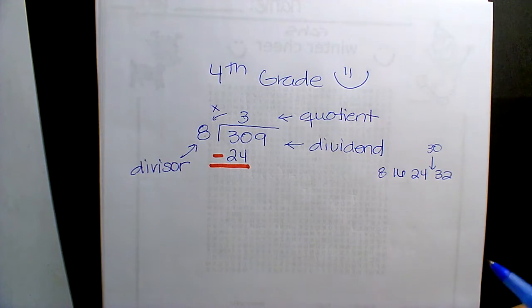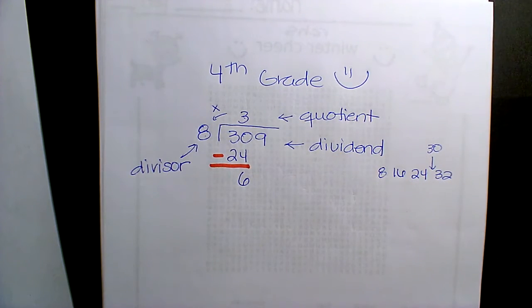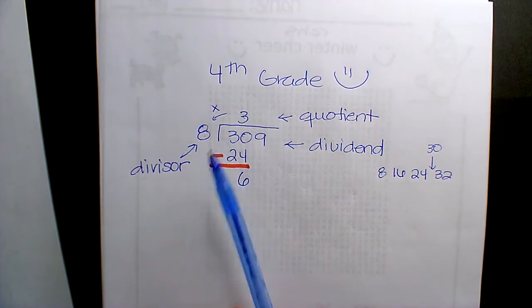And so what's 30 minus 24? 6. And you know you did this correctly, the first step, because 6 is a smaller number than 8. So you're right. Had it been 9, you could have gone a little higher.